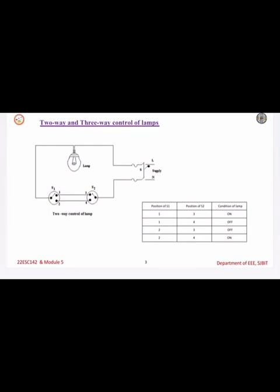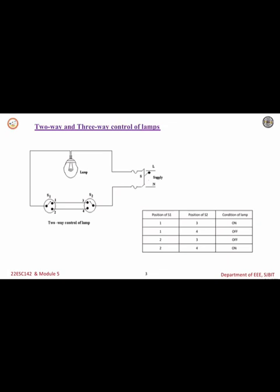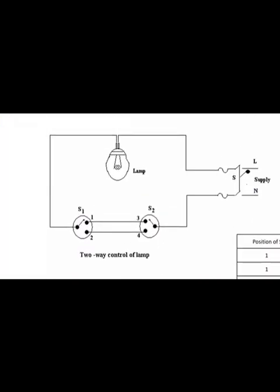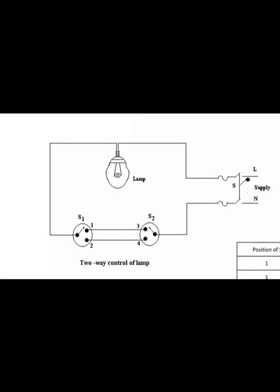For a two-way lamp, it is similar to the single switch circuit, but the difference is that we use two switches to control a single lamp instead of one. We name these switch one (S1) and switch two (S2). The line is given to the lamp, then from the lamp it goes to switch one, then switch two, and then to the neutral.